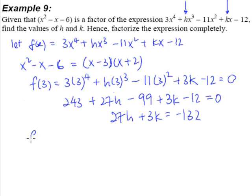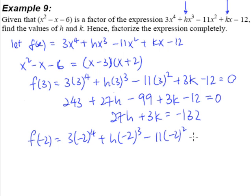The next thing we do is of course we substitute in when x is equal to minus 2. So we have 3 times minus 2 raised to the power of 4 plus h multiplied by minus 2 raised to the power of 3 minus 11 times minus 2 raised to the power of 2.